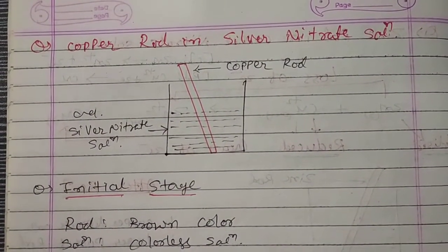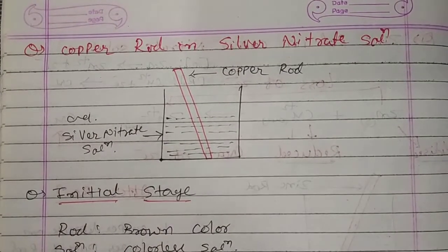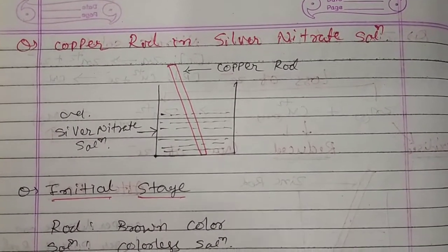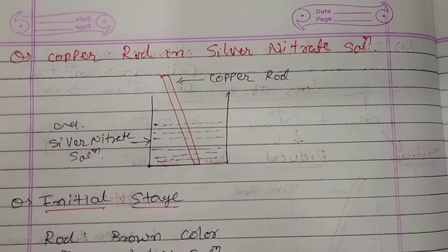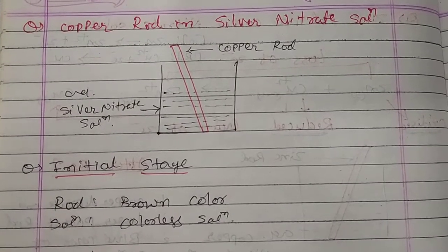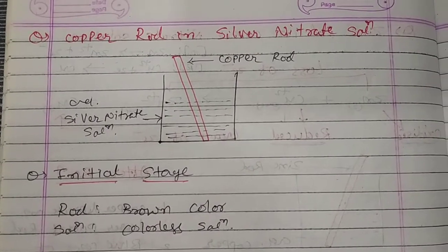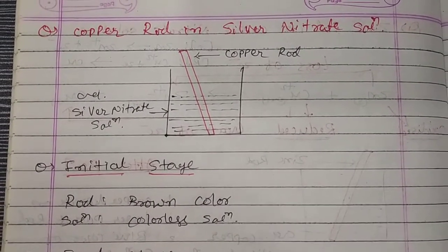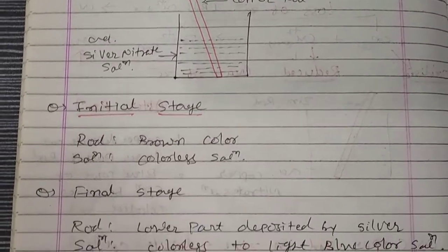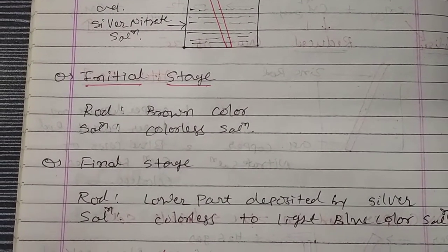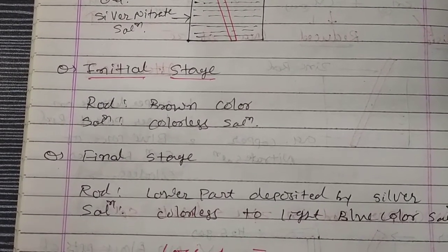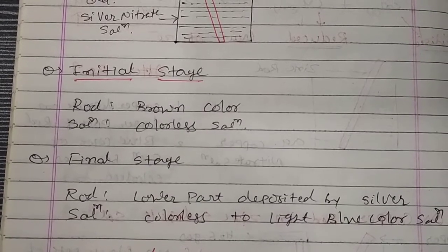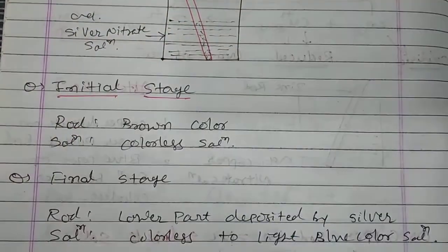The third experiment is a copper rod dipped in a silver nitrate solution. Initial stage: the copper rod is obviously brown in color, and the silver nitrate solution is transparent, water white, colorless. After one hour, in the final stage at completion of reaction, you see silver deposition on the lower bottom part of the rod — the deep part of the rod that was submerged in the solution shows silver deposition.